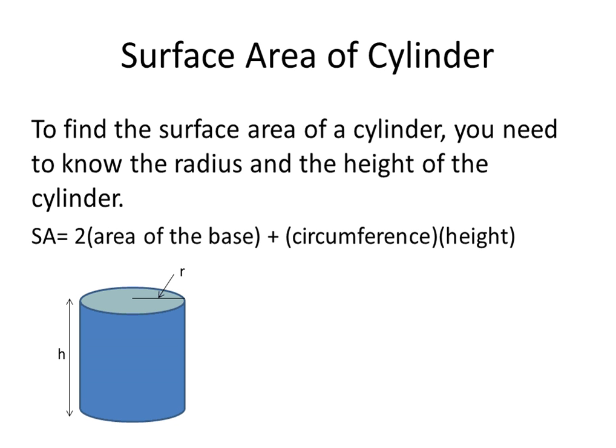Next, let's look at the surface area of a cylinder. To find the surface area of a cylinder, you need to know the radius and the height of the cylinder. So you find the area of the base, which both the top and the bottom of a cylinder will be circles. So you do 2 pi r squared. You multiply it by 2, because there's 2 of them.